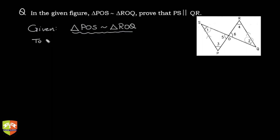To prove: what do we need to prove? We need to prove that PS is parallel to QR. How to prove that? Let's see the solution or the proof. What I'm going to write is triangle POS is similar to triangle ROQ. This is given.